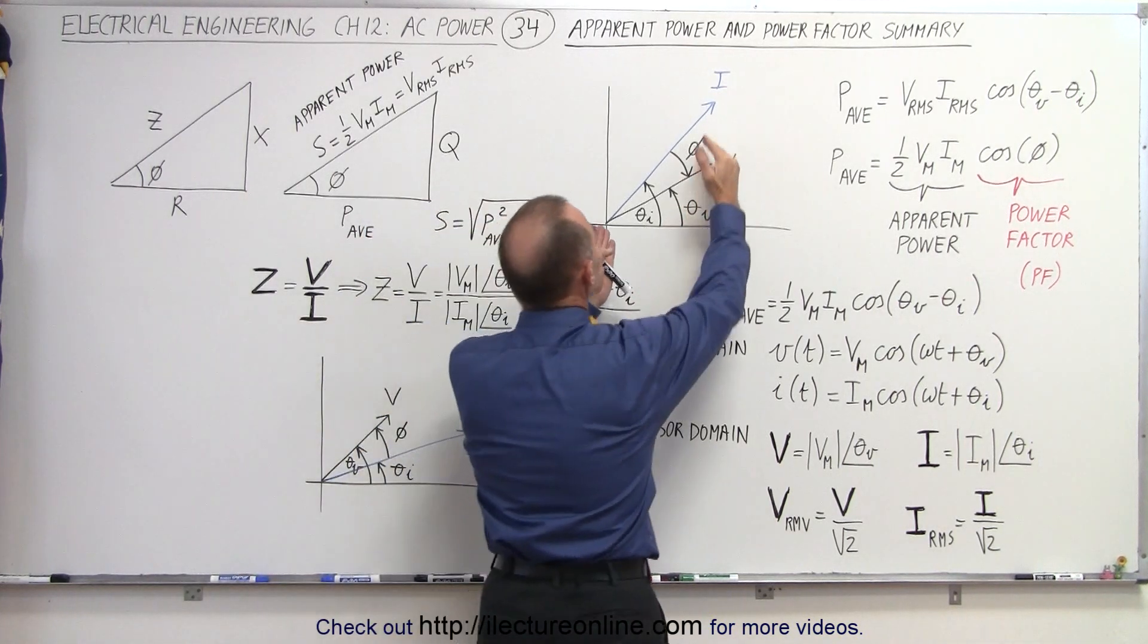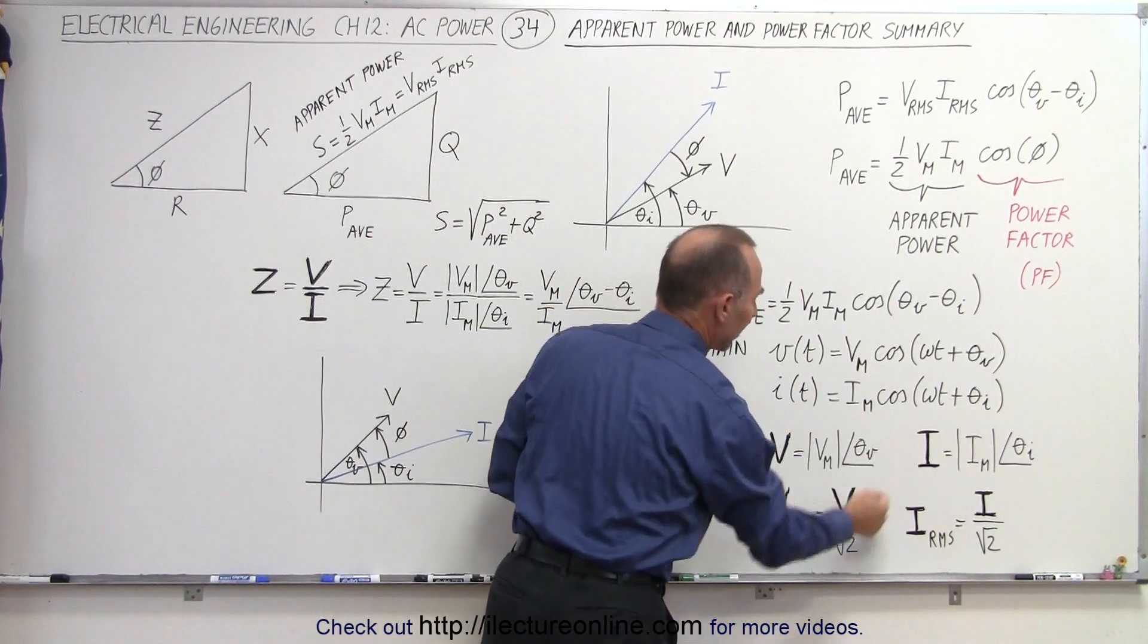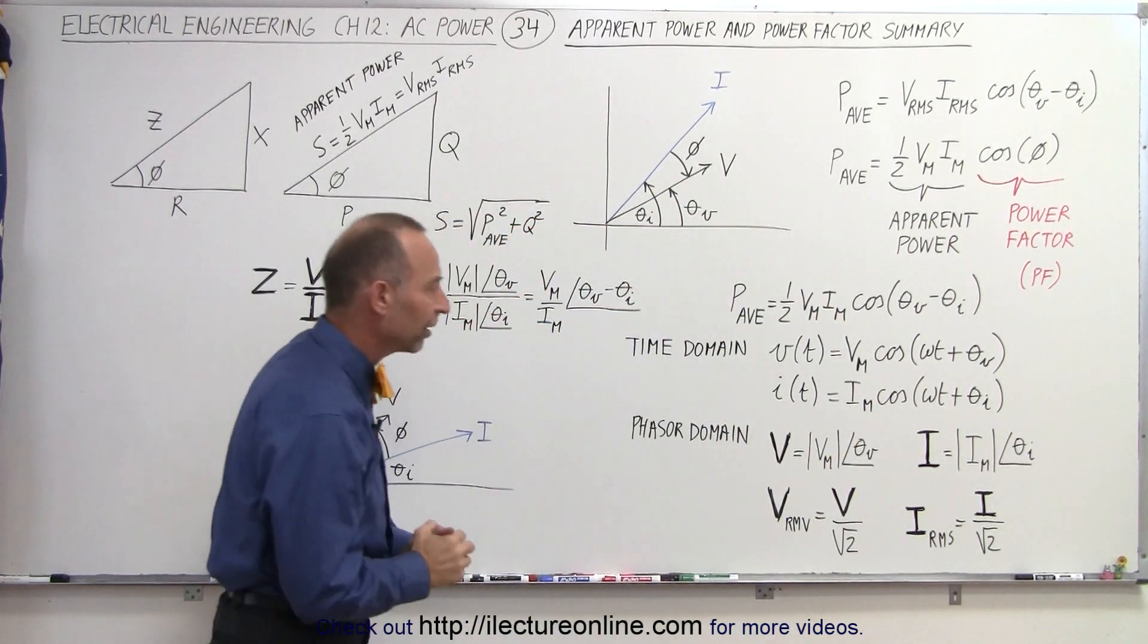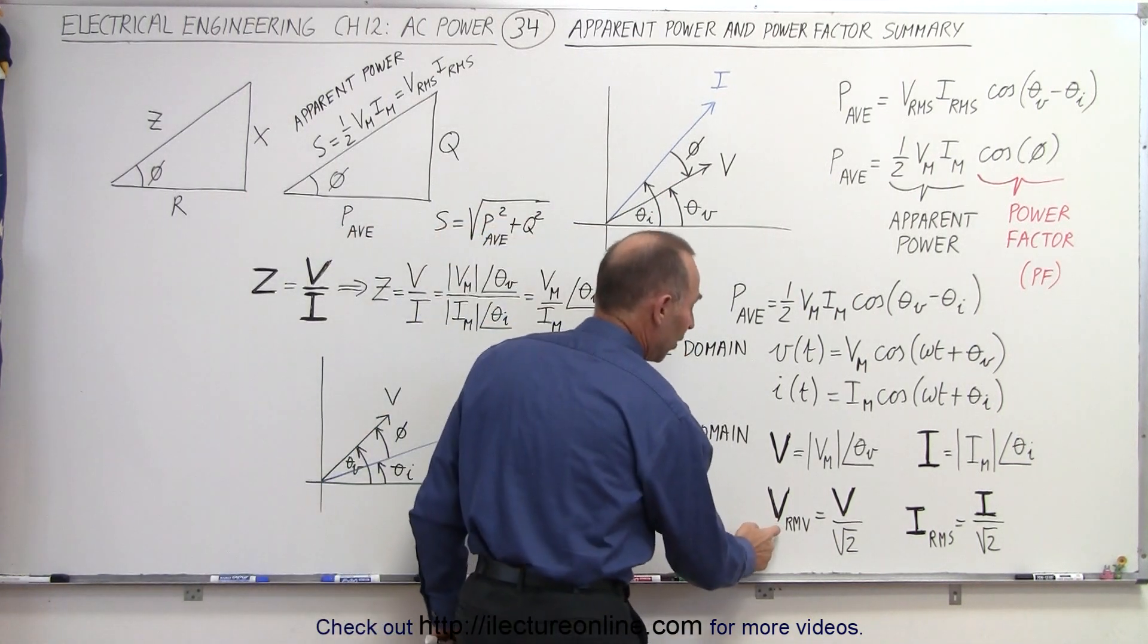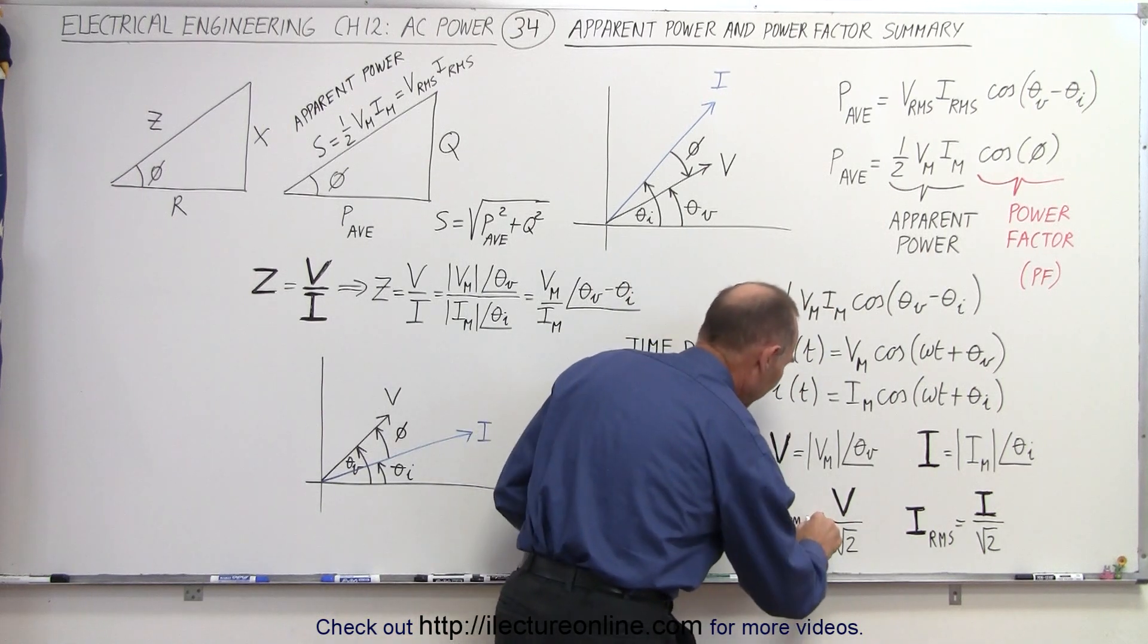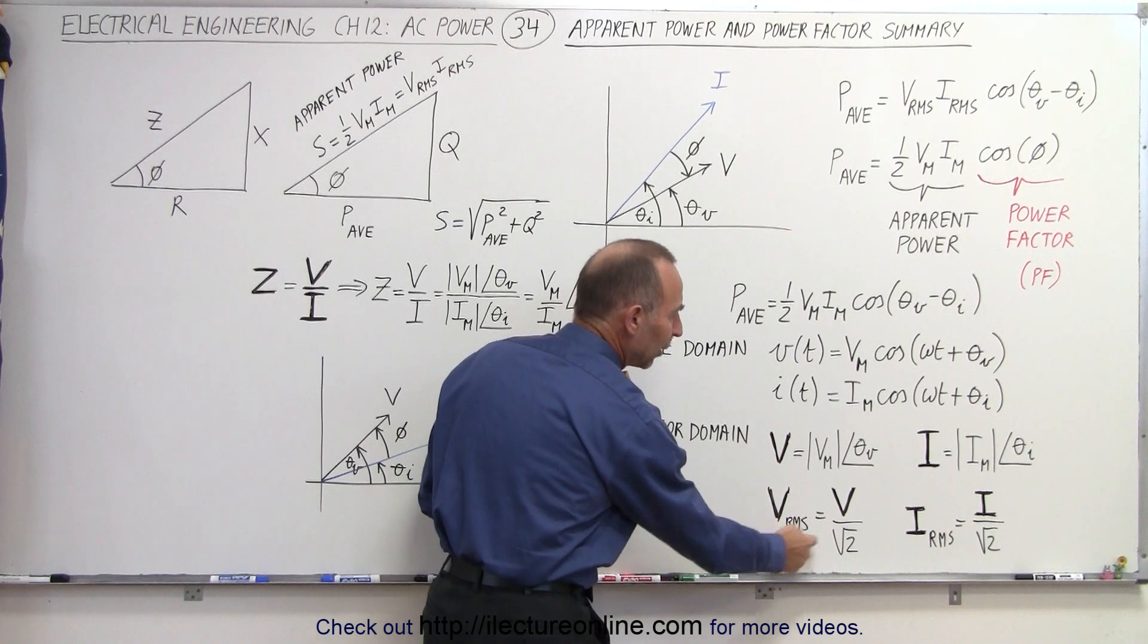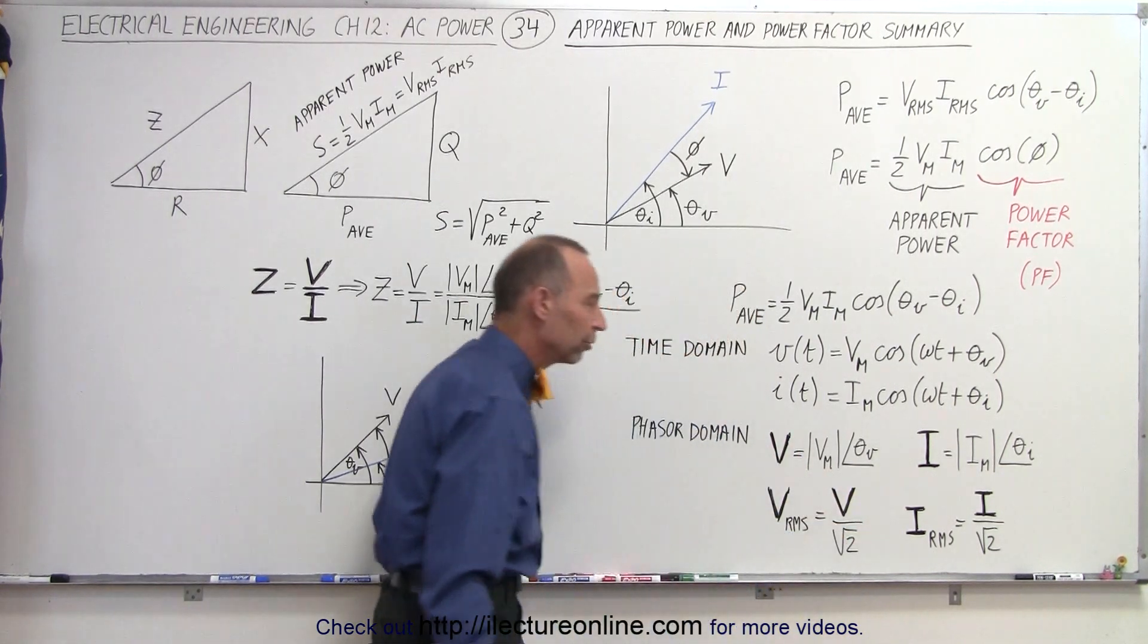So in other words, the length of the phasors are represented by these particular values right here. And then we have the phase angle, which is represented here relative to typically the horizontal axis. And of course, if you want the phasor of the RMS voltage, then we simply take the phasor of the voltage and divide it by the square root of 2.